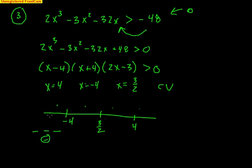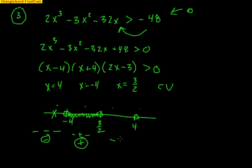Pick any number between negative 4 and 3/2 — I'll pick 0. Zero minus 4 is negative; 0 plus 4 is positive; 2 times 0 minus 3 is negative. Two negatives make a positive, and with the remaining positive that gives a positive. I like positives. Now test between 3/2 and 4 — pick 2. Two minus 4 is negative; 2 plus 4 is positive; 2 times 2 is 4, minus 3 is still positive. A negative and a positive make a negative, and another positive makes a negative. I don't like negatives.